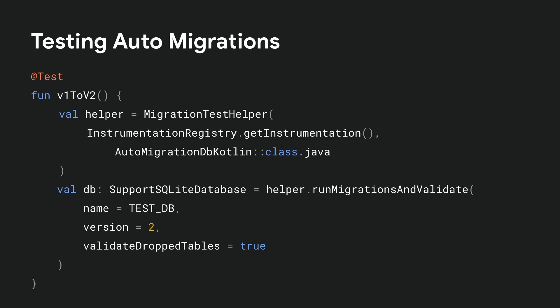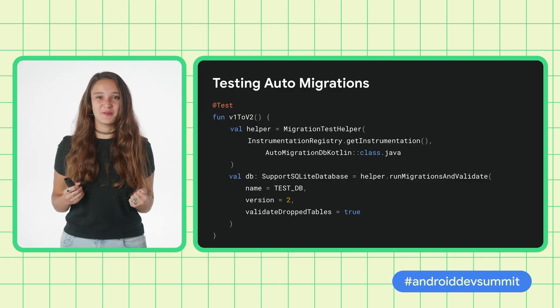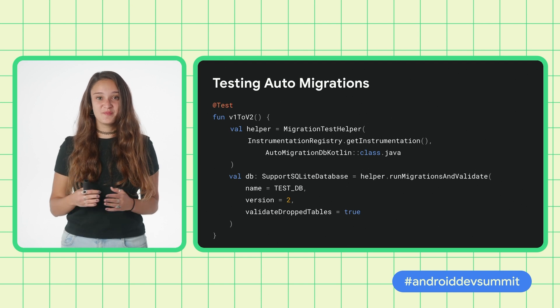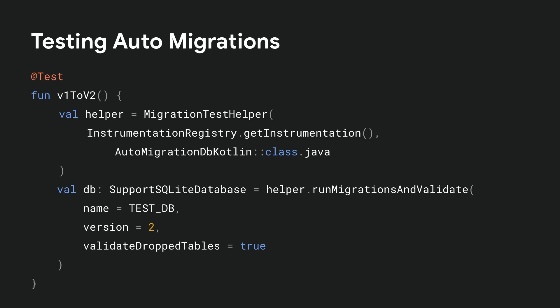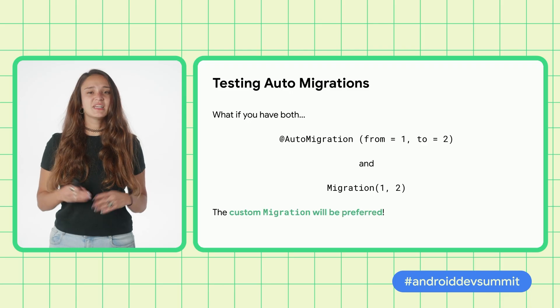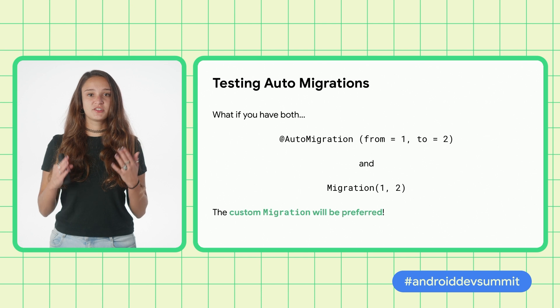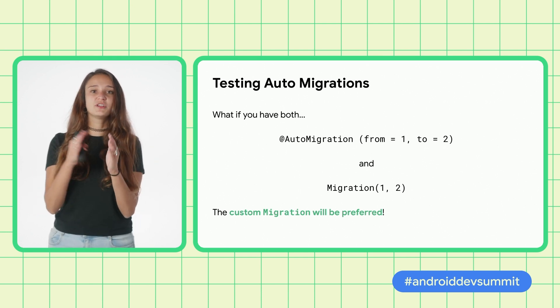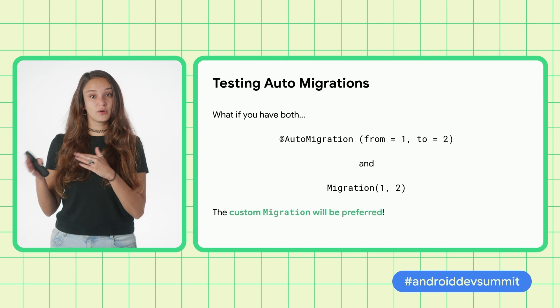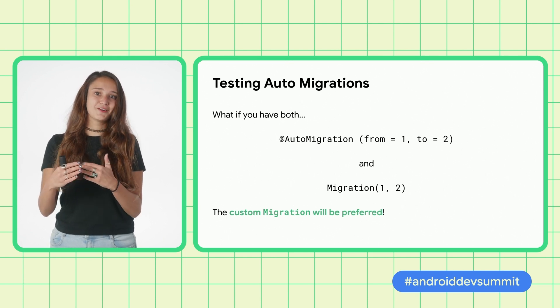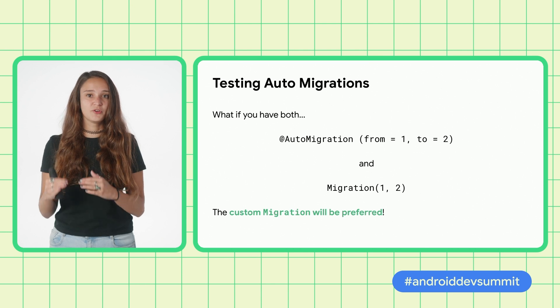Let's say you've started using auto migrations in your implementations, and you want to test that they're working properly. Good news — to test auto migrations, you can actually use the existing Migration Test Helper API. No change needed. Migration Test Helper will automatically run and validate all auto migrations, and no input will be needed from you. Under the hood, if auto migrations are present, they will be automatically added to the list of migrations to be run and validated. It is important to note that user-provided migrations are of higher priority, meaning that if you define an auto migration between two versions that already had a custom migration defined, the custom migration will be preferred over the auto migration.